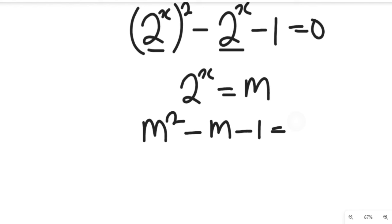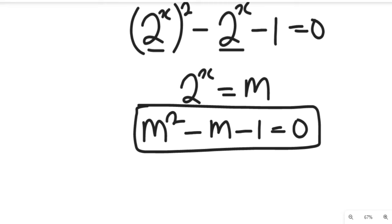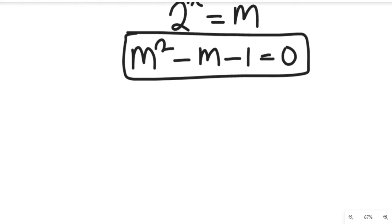This is a quadratic equation. So we're going to solve it using the quadratic formula. From the quadratic formula, m equals negative b plus or minus square root of b squared minus 4ac, all divided by 2a. Here a equals 1, b equals negative 1, and c equals negative 1.